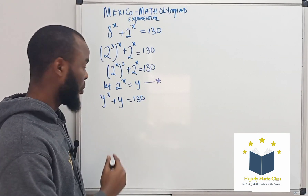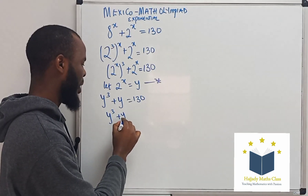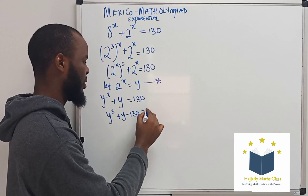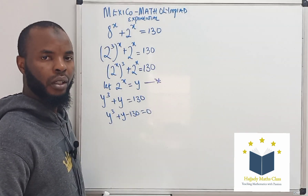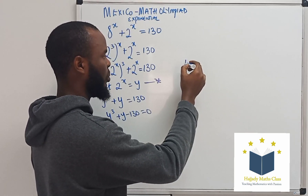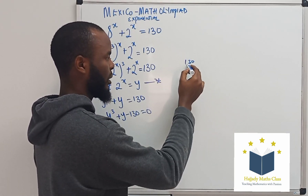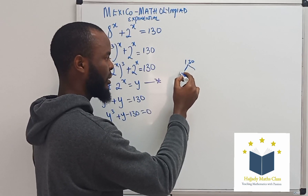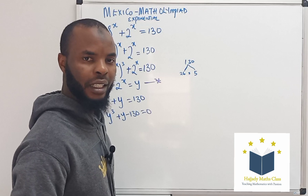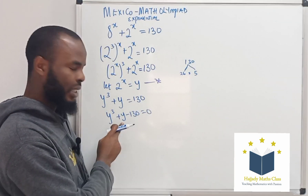Now, in writing this equation, I'm going to have y to the power of 3 plus y minus 130 equals to 0. Now, looking at this 130, this can be 26 multiplied by 5. Using this basic knowledge to simplify y further.